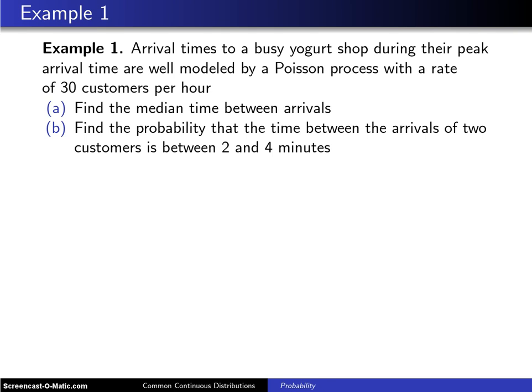A series of examples illustrating the exponential distribution begin now. So here's the first one. Arrival times to a busy yogurt shop during their peak arrival period are well modeled by a Poisson process with a rate of 30 customers per hour.